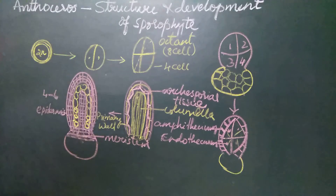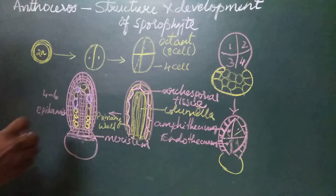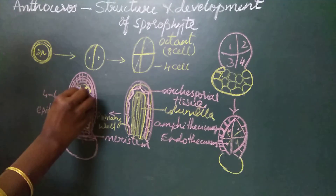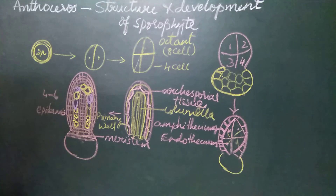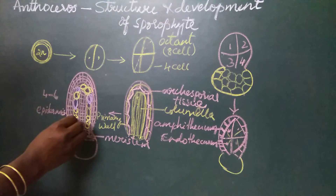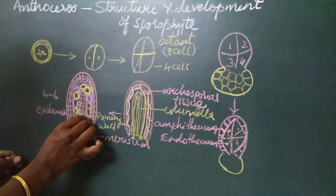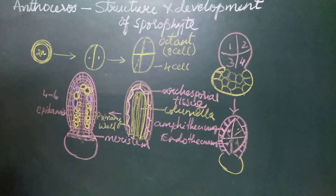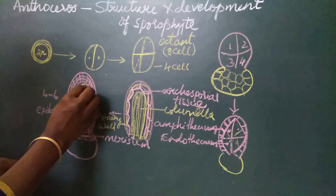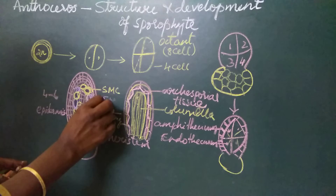At maturity, some cells of the archesporial tissue are sterile and some are fertile. The fertile cells of the sporogenous tissue are called spore mother cells. Initially, when the sporophyte is young, there is only one layer of archesporial tissue. But as the sporophyte matures, we find two to three layers of archesporial tissue inside the mature sporophyte. The fertile cells inside the capsule are called spore mother cells.